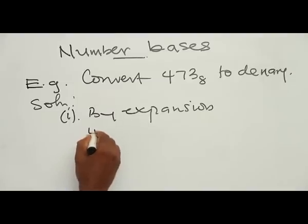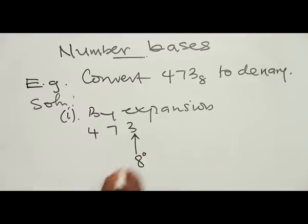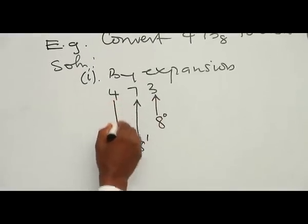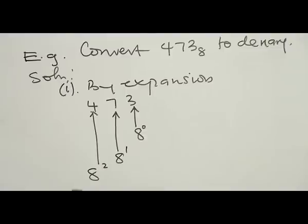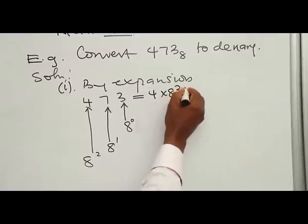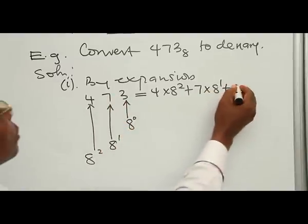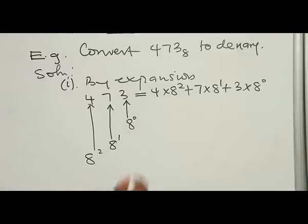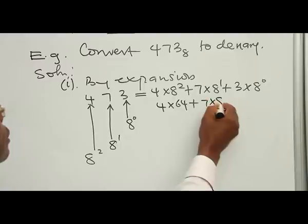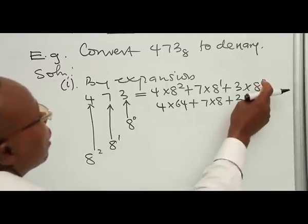By expansion: you have your 473 which is base 8. Your 3 here has place value 8 to the power 0, the 7 is under 8 to the power 1, and then the 4 is under 8 to the power 2. So in expanded form it is: 4 times 8 to the power 2, plus 7 times 8 to the power 1, plus 3 times 8 to the power 0. By the law of indices, any number to the power 0 is equal to 1.